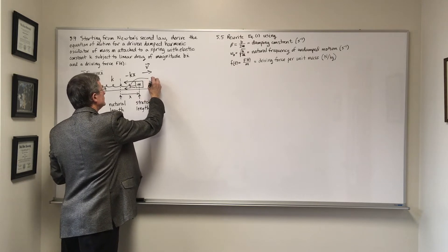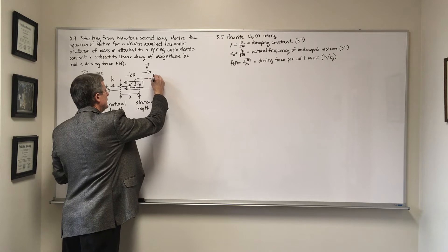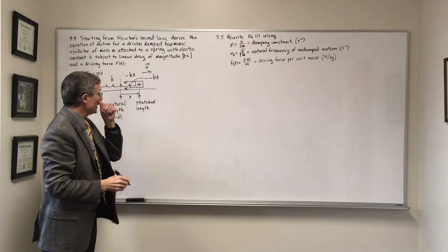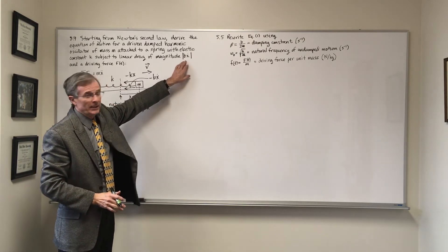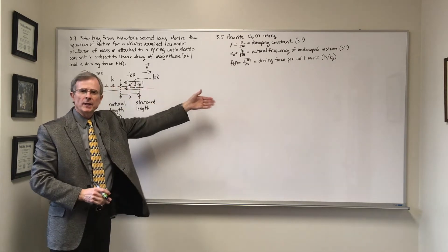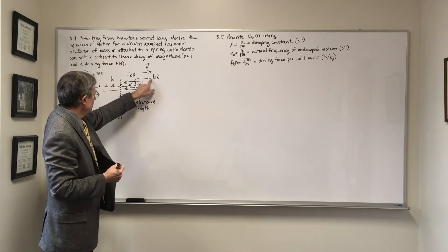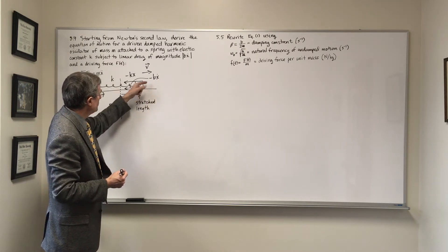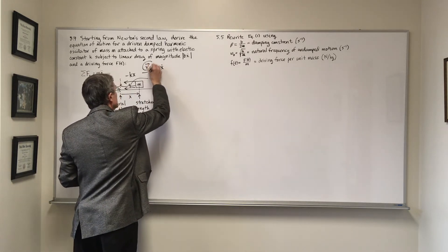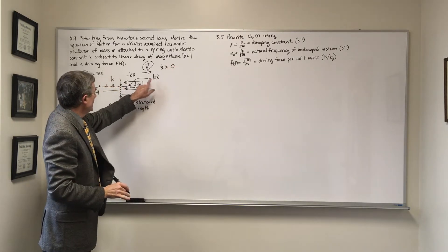So this will be minus B X dot. I should really write it this way: the magnitude X dot can be positive or negative, so I want to do a magnitude. I better take the absolute value of that. But in this case, if it's moving to the right, the drag force is going to be to the left. There's a minus sign because X dot would be positive in this case. If it is to the right, then X dot has to be greater than zero, and that minus sign will make that force in the negative X direction.